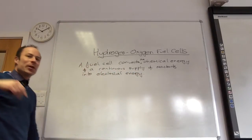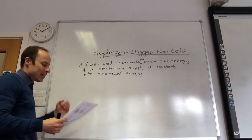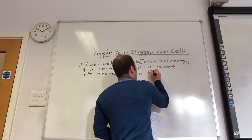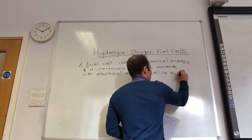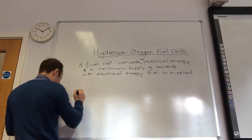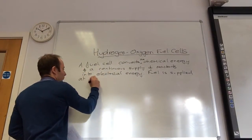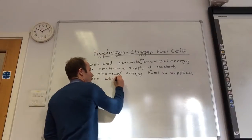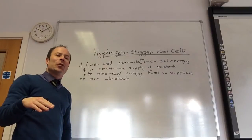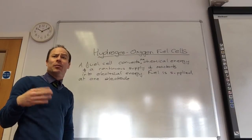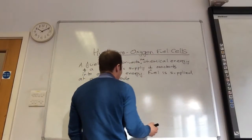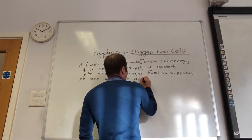We continue to put the reactants in and we continue to get electricity out. Fuel is supplied at one electrode. The other electrode always has oxygen, because fuel is something that we burn with oxygen. So fuel is supplied at one electrode and oxygen at the other electrode.